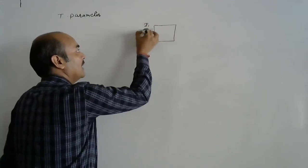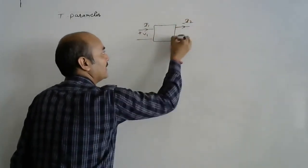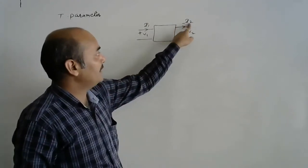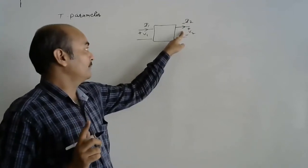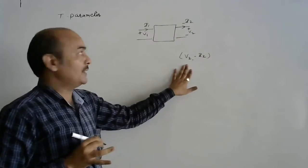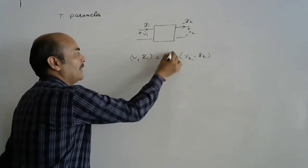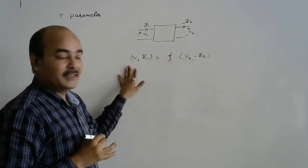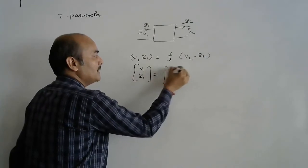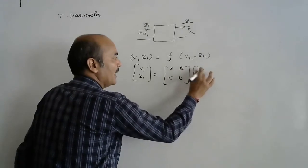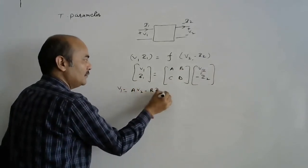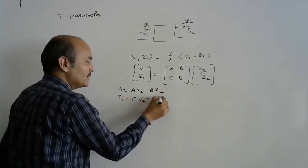In the T parameter formulation, input current I1 and voltage V1 are on the input side, and the output side uses −I2 and V2. The negative sign and reversed direction of output current are used because we are transmitting the signal. Output voltage V2 and output current I2 are the independent variables, while V1 and I1 are the dependent variables. The matrix equation is [V1; I1] = [A, B; C, D] · [V2; −I2], giving V1 = A·V2 − B·I2 and I1 = C·V2 − D·I2.